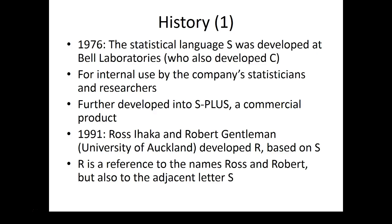Researchers at Bell Laboratories have received eight Nobel Prizes in all. At that time in the 70s, there were no real statistical software, so statisticians had to be programmers and code the functions they wanted to use themselves. This had to be done over and over again, so there was a lot of unnecessary work. Within Bell Laboratories, they thought it might be a good idea to develop software with standardized statistical functions that could be reused.